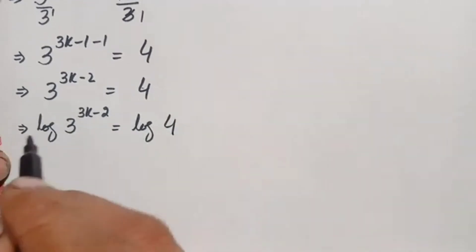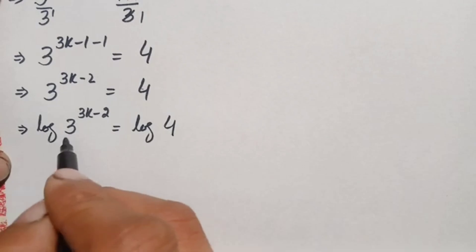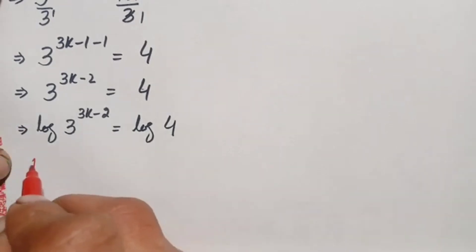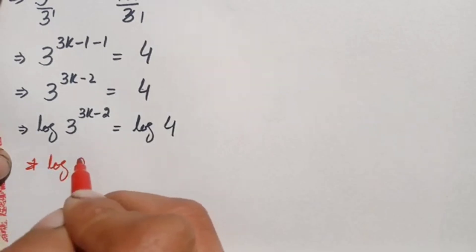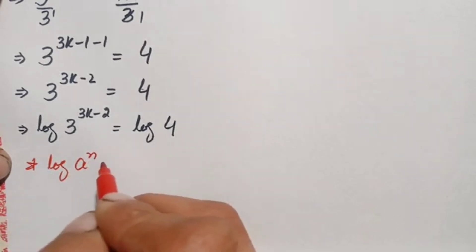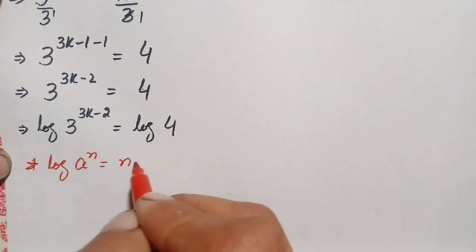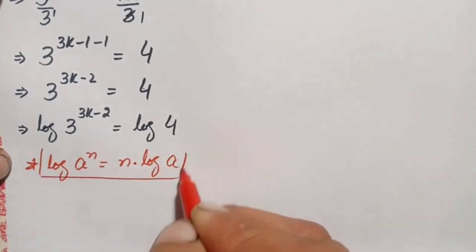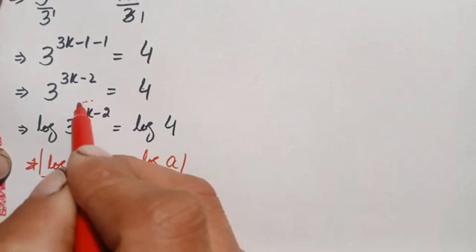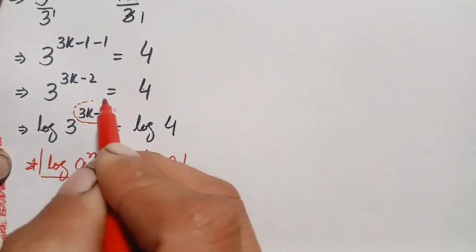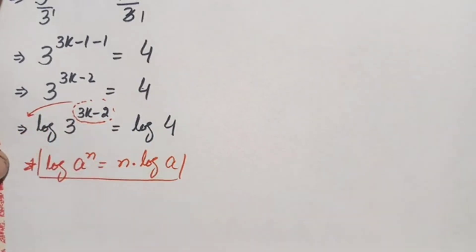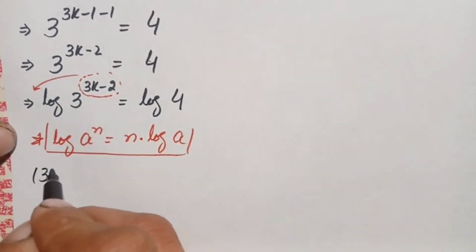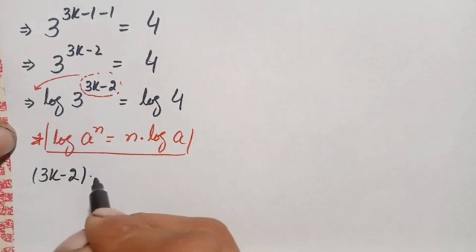On the left hand side we use the logarithm power identity: log of a raised to power n equals n times log of a. Applying this, the left hand side becomes (3k − 2) times log 3, which equals log 4.